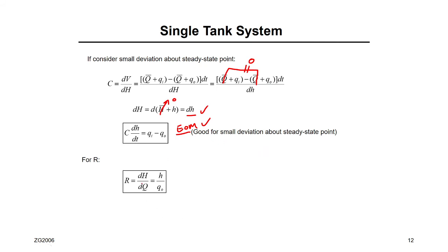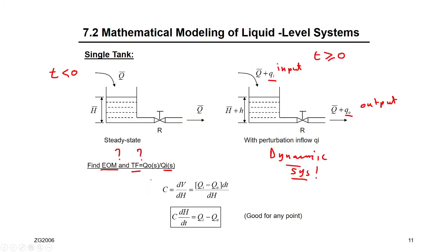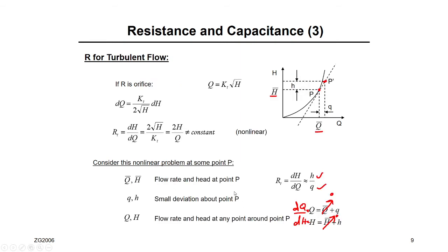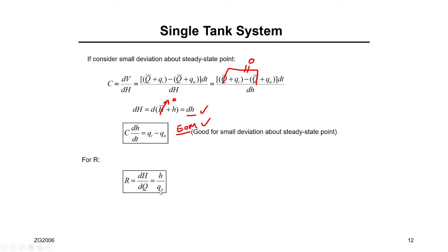The additional equation we use is the resistance inside the valve. Since the relationship between head and flow is nonlinear, we linearize it. After linearization for a steady-state problem, the resistance R equals small h over small q-out. You need to remember this linearized resistance equation — the head divided by the flow deviation. This is equation number two.